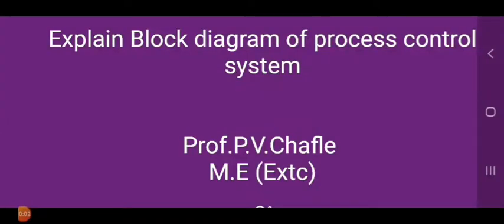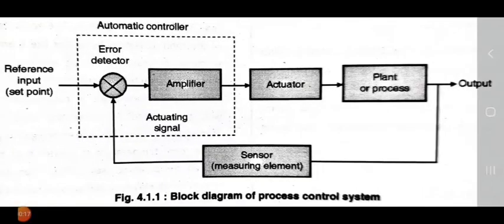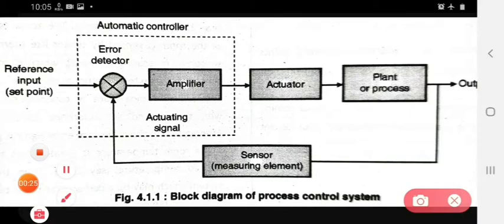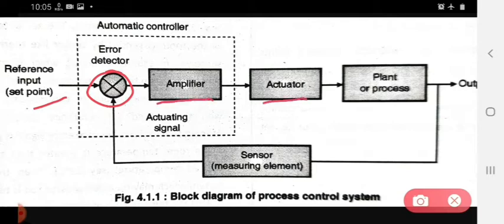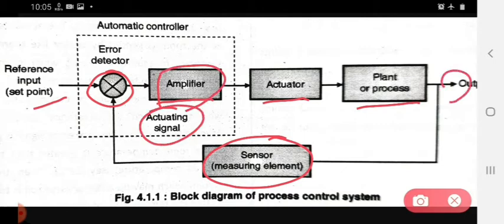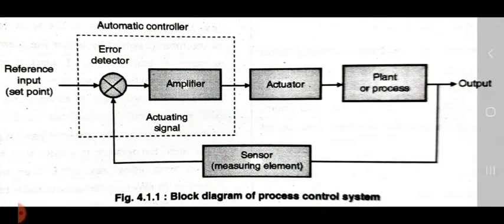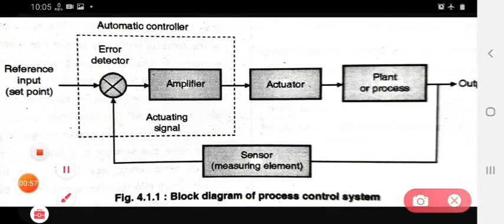Hello students, today we start with the new unit — Unit 3: Process Controllers. Today we see the block diagram of the process control system with a detailed explanation. In this block diagram, the blocks available are: reference input, error detector, amplifier, actuator, plant or process, and the sensor or measuring element. This portion is called the automatic controller.